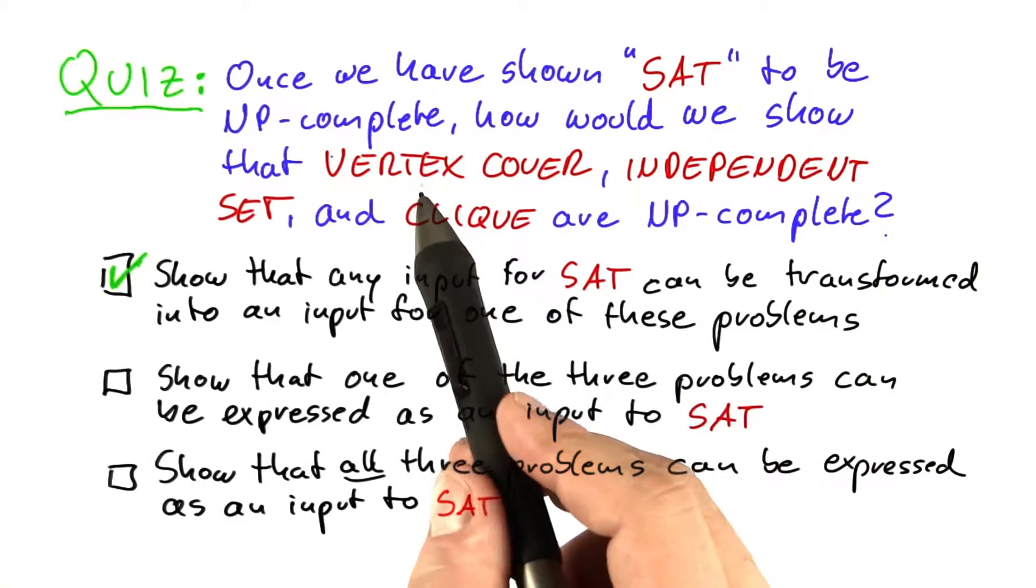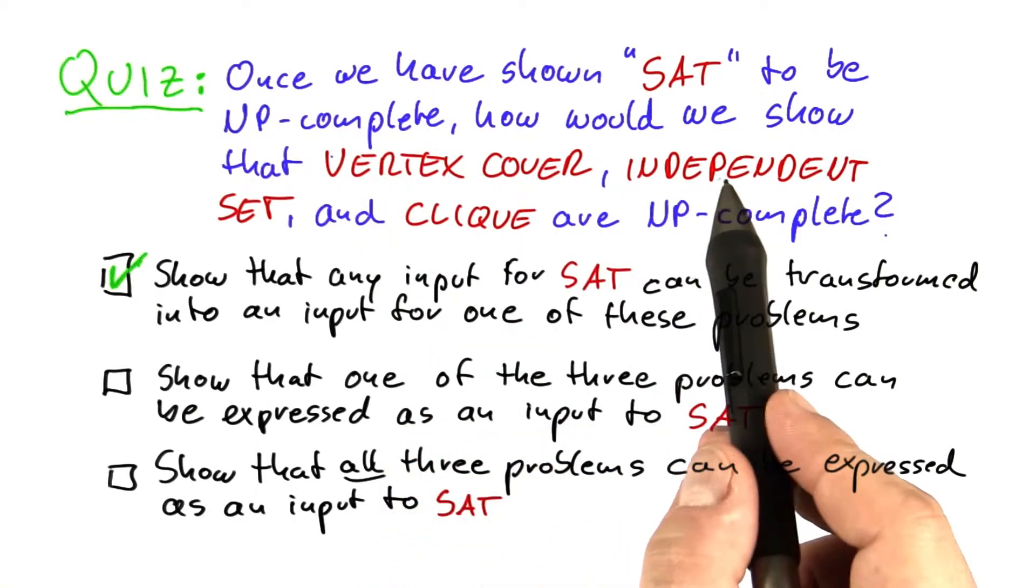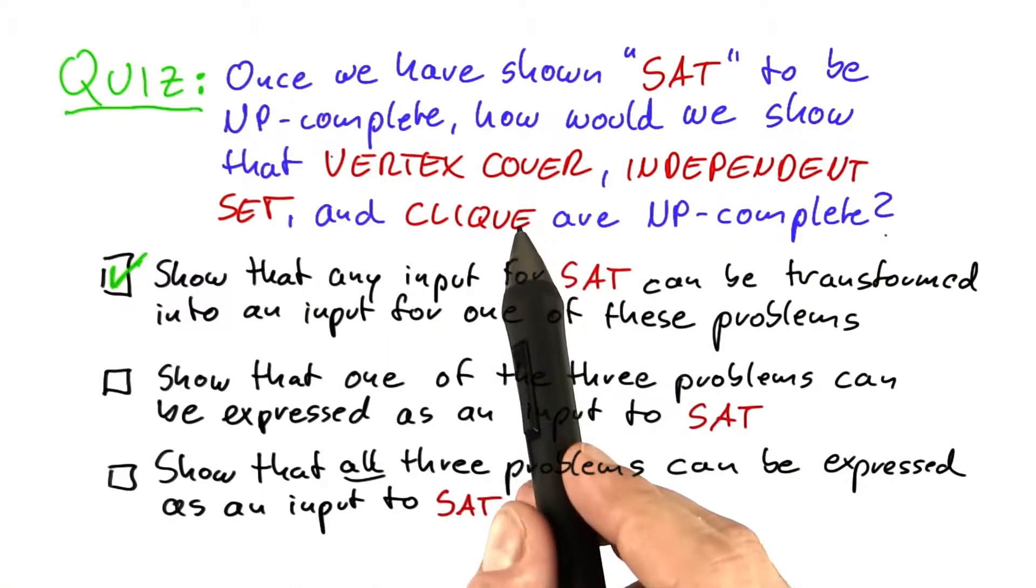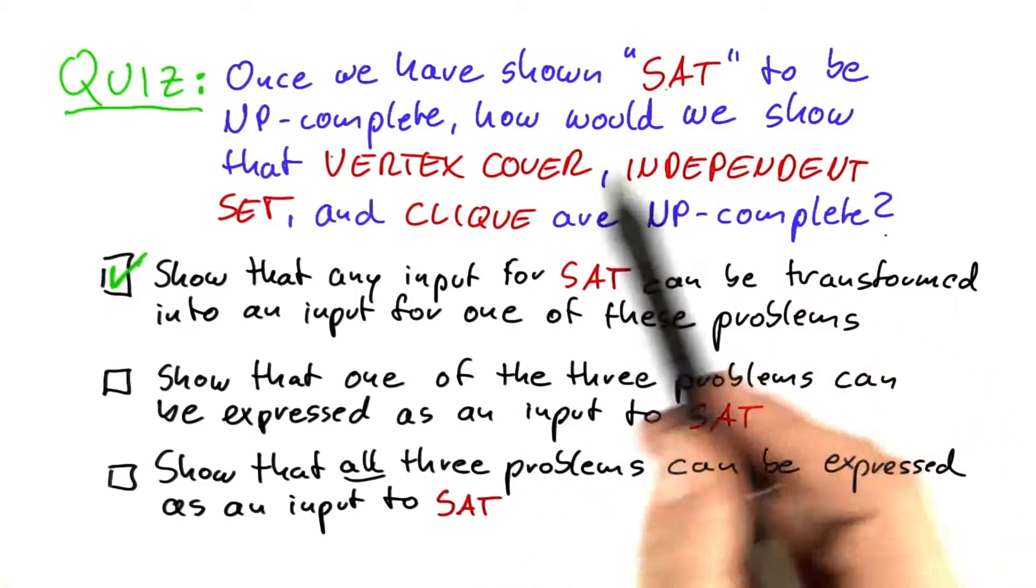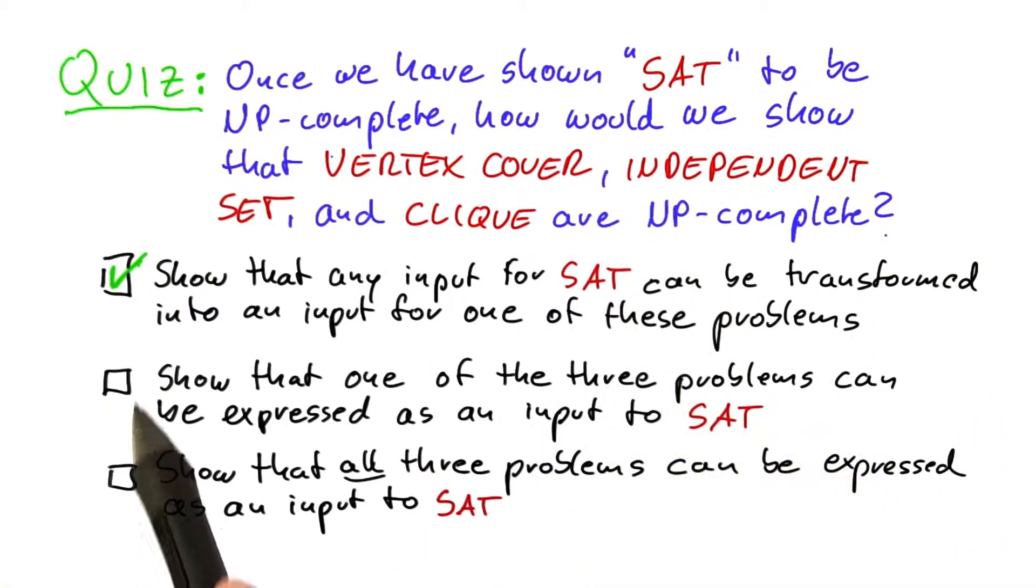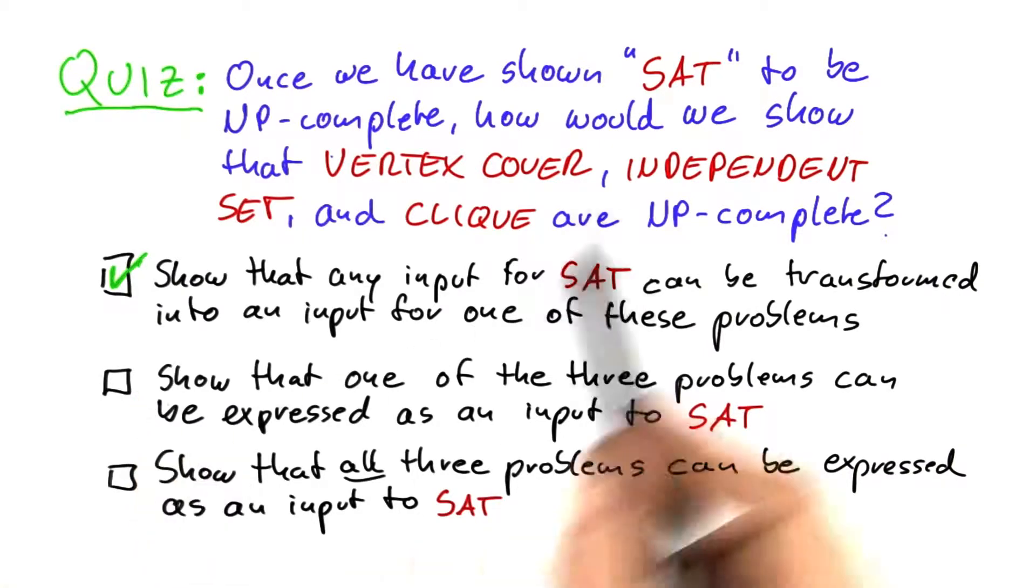Because that shows us that in a way, vertex cover or independent set or clique are at least as hard to solve as SAT. And because SAT is NP-complete, if one of these problems is at least as hard to solve, then that problem must be NP-complete as well.